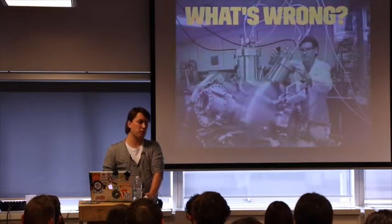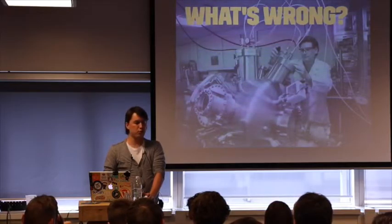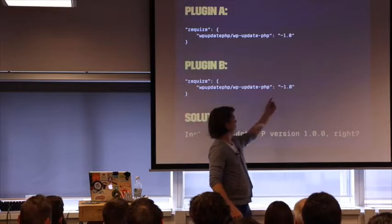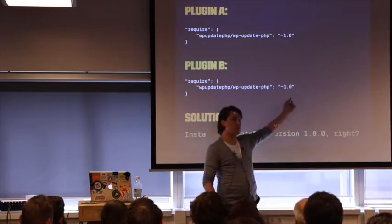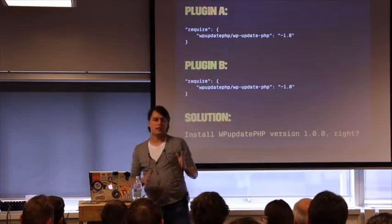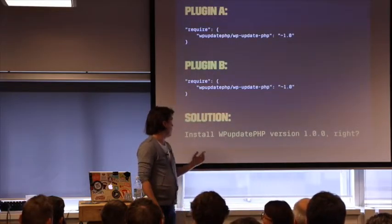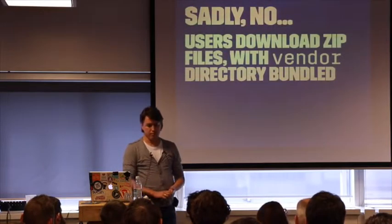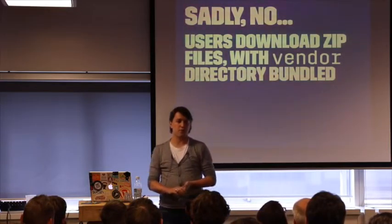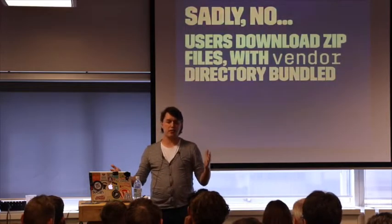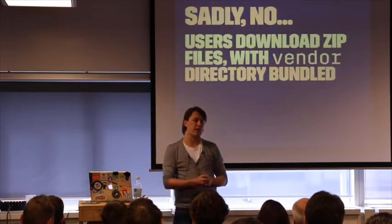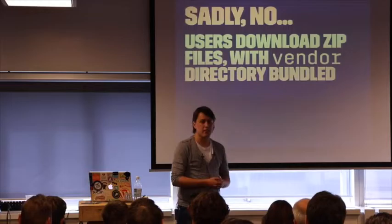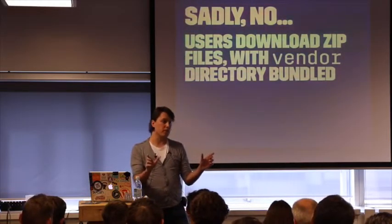So what's wrong? Two plugins affect each other, both containing that library. You can see the version constraint — they both require something within major version 1, it can be 1.5 or 1.6. With semantic versioning, as long as it's backwards compatible, they can work with each other. Normally Composer would install something like 1.0.0 or 1.5.5. Sadly, that doesn't work this way in WordPress. When you download a plugin as a zip file, that zip file has to contain all the files of your plugin, including the vendor directory. So both conflicting plugins had a different version of that dependency bundled in their vendor directories.